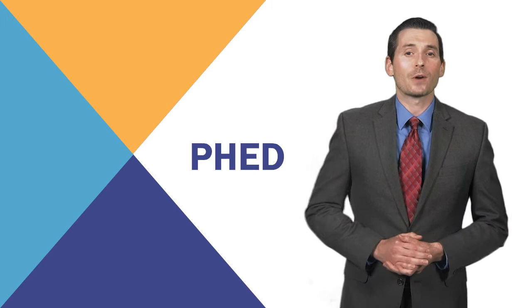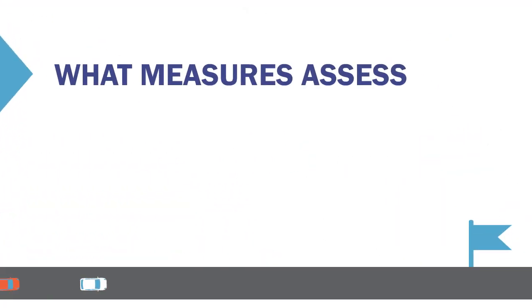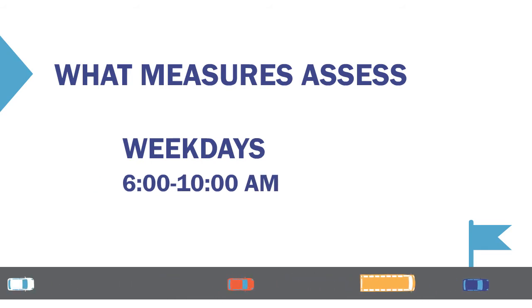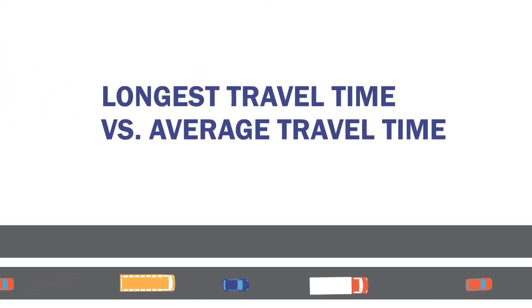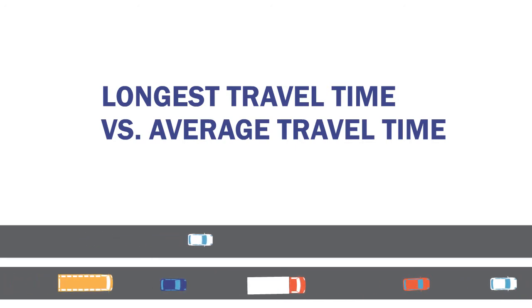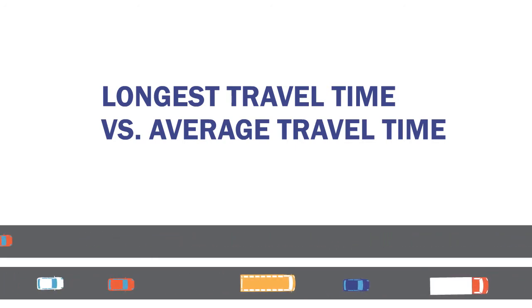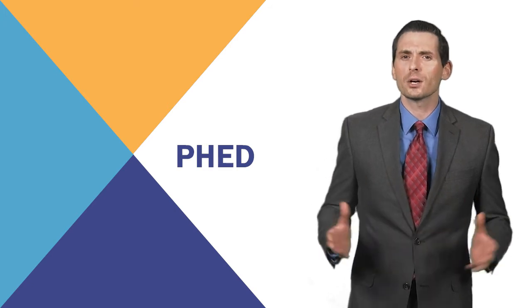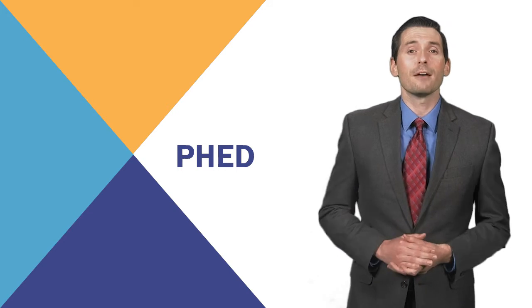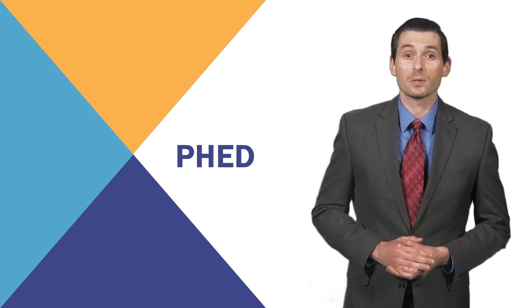The first measure, the annual hours of peak hour excessive delay per capita on the National Highway System, or PHED, is a measure of traffic congestion. It evaluates congestion during peak hours — weekdays during 6 to 10 a.m. local time, and either 3 to 7 p.m. or 4 to 8 p.m. The level of congestion is based on the longest travel time compared to the average travel time on individual road segments, and also considers the number of vehicles on the road and vehicle occupants. The PHED measure evolved during the rulemaking process; commenters felt that proposed peak hour travel time and excessive delay measures created unnecessary complication and added burden. In response, FHWA consolidated those two proposed measures into the PHED measure.